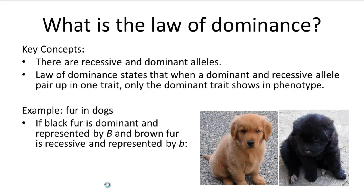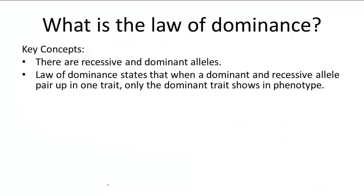Let's try another example. If Amy inherits a blue eye allele, or little b, from her mother, and a brown eye allele, or big B, from her father, what color eyes is she going to have? Amy's genotype is big B, little b. And because we know brown is the dominant trait, and the law of dominance states that only the dominant trait will show in the phenotype, Amy will have brown eyes. It's just that simple — law of dominance.